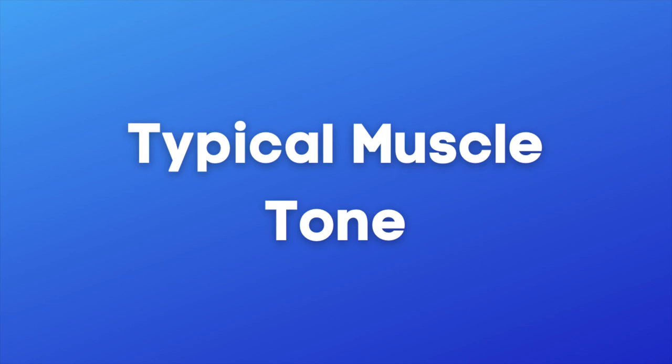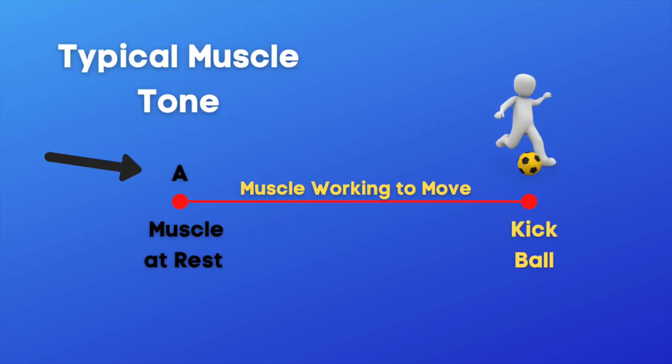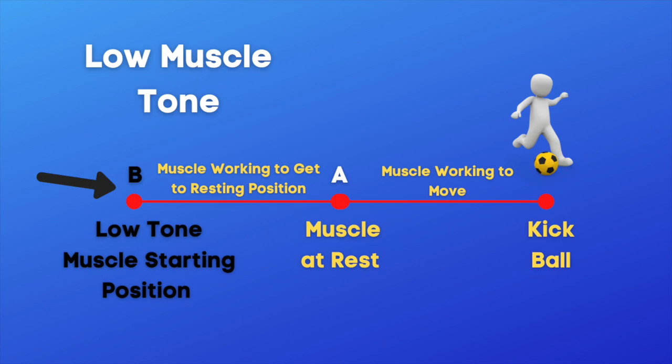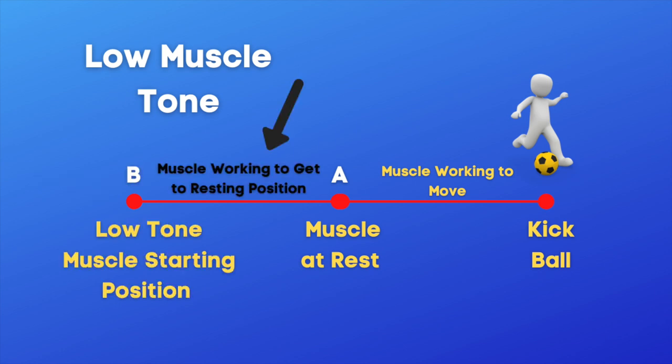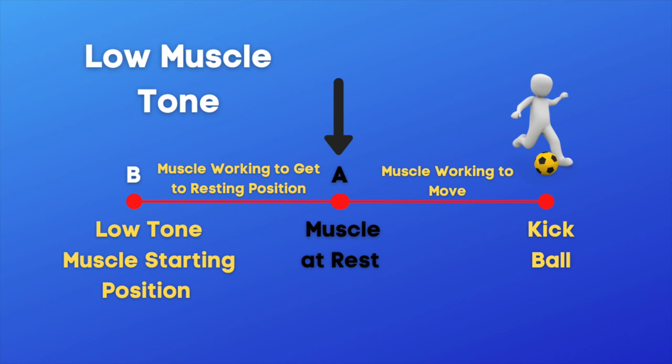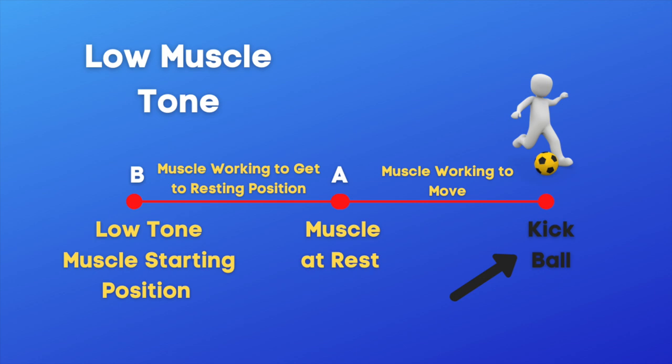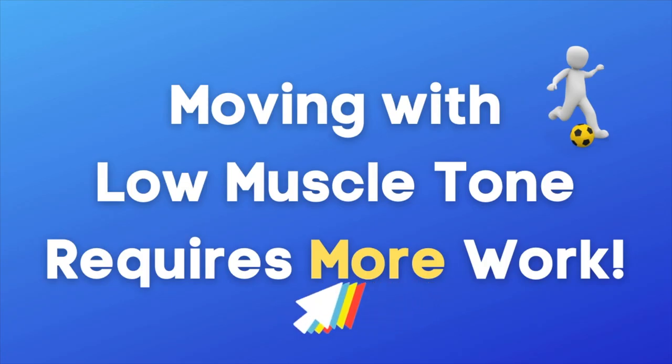Muscle tone can sometimes be a bit of a head-scratcher, so let's try an example. Let's begin with a person with typical muscle tone. They begin at point A, which is their muscles at rest. Then their muscles start working so that they can achieve the desired action, which is kicking the ball. Now let's consider a person with low muscle tone. They begin at point B, which is a muscle position with even less tension than a muscle at rest. They begin working to get simply to that resting position, and then continue working to try to get to the desired action of kicking a ball. So this simple action takes twice the work.